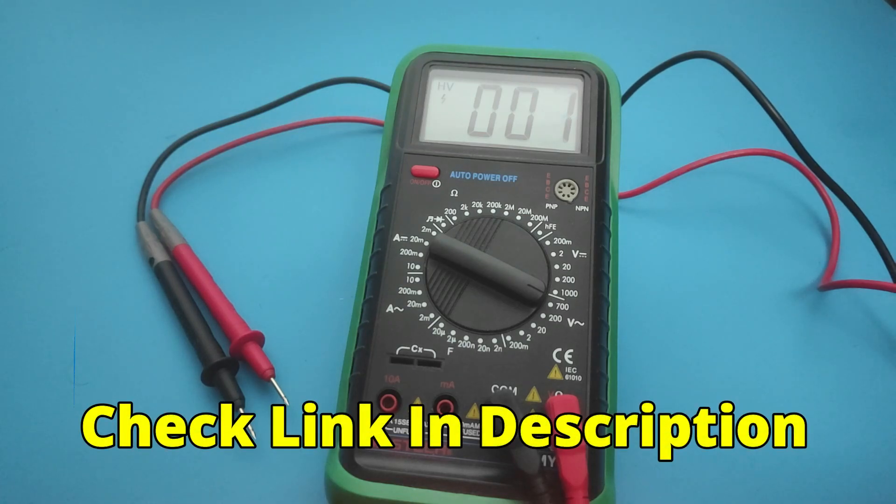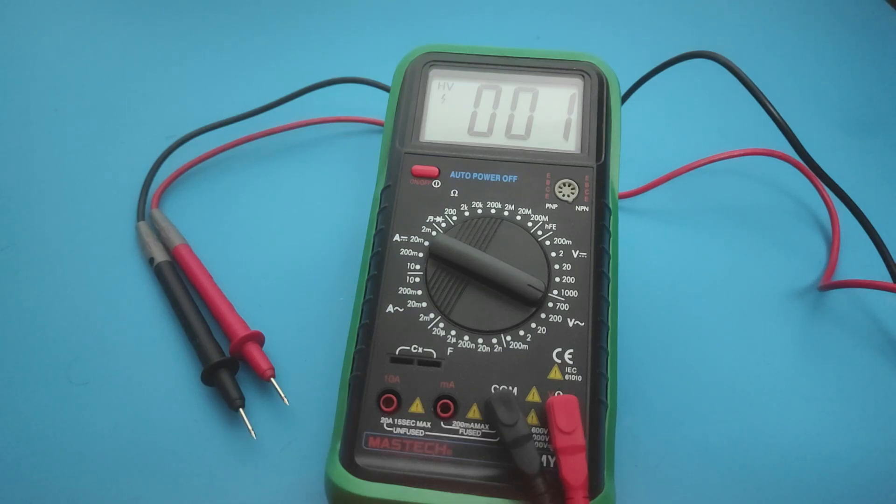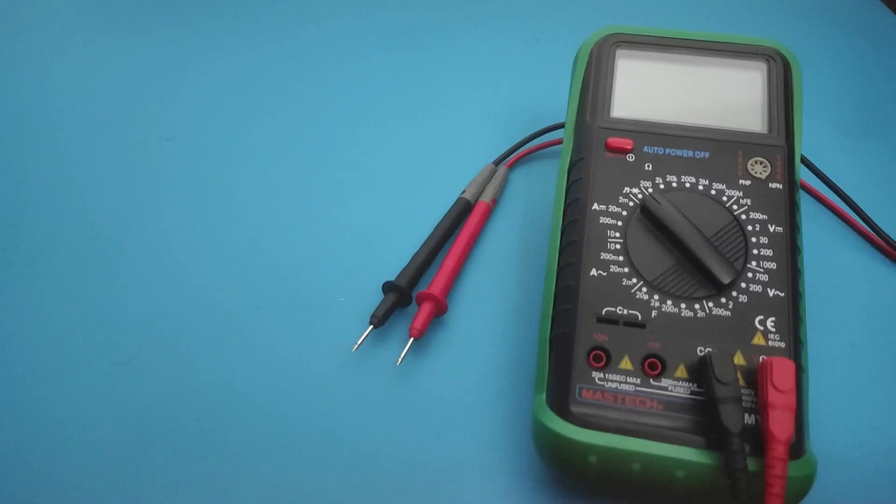If you don't have a multimeter, check the first link in the description to get one for yourself. You can't identify wires without a multimeter.